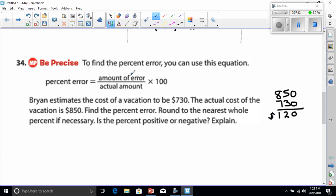So the amount of error is 120 and the actual amount was $850, the actual cost. Round to the nearest whole percent if necessary. Is the percent positive or negative? Well let's find out. We have 120, and remember whenever we have a line between two numbers like this, it's really a division problem. You see how a fraction looks like a division problem except we replace the dots with numbers. So we have 120 divided by 850.